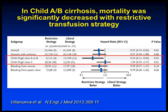Overall, patients with cirrhosis had better survival with the restrictive strategy than with the liberal strategy. When stratified by Child class, Child A and B patients had significant improvement in survival with the restrictive strategy. For Child C patients, the benefit was not there — not necessarily because of harm, but because these patients are so sick that few interventions improve their survival. Overall, the restrictive strategy is better, and re-bleeding was also significantly lower — 10% versus 16%.